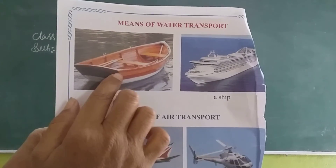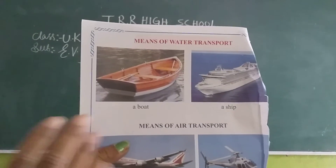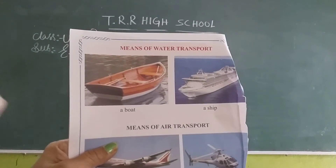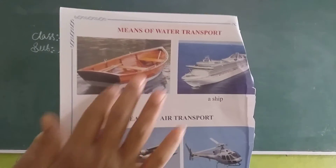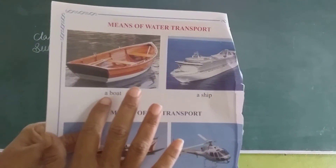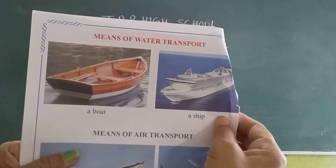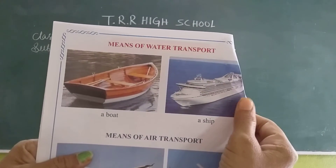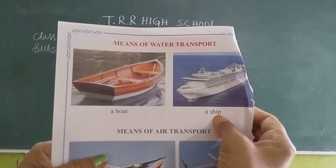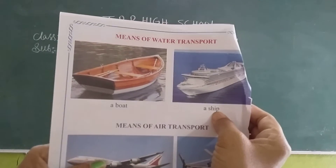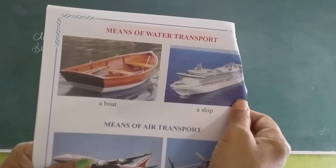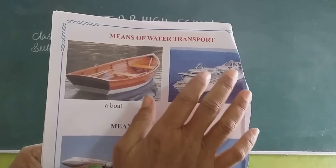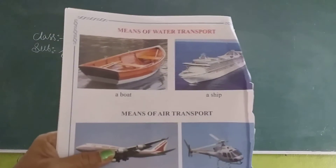Boat means it is very small — only 3, 4, or 5 people will travel by the boat. But a ship is very big. Ship means it will be very big — so many members will travel in the ship.